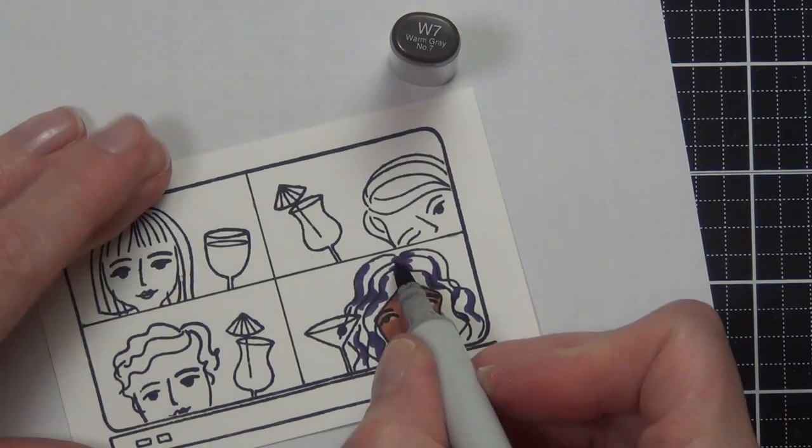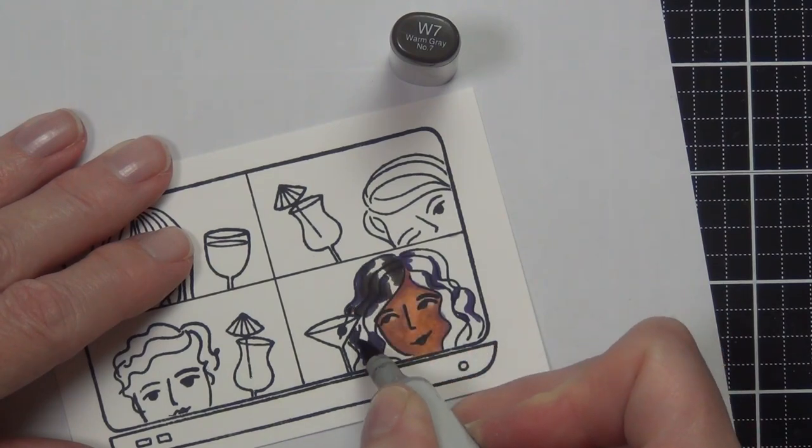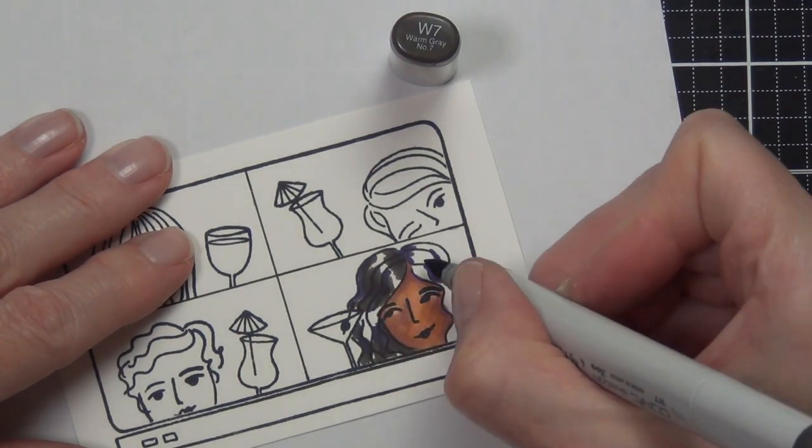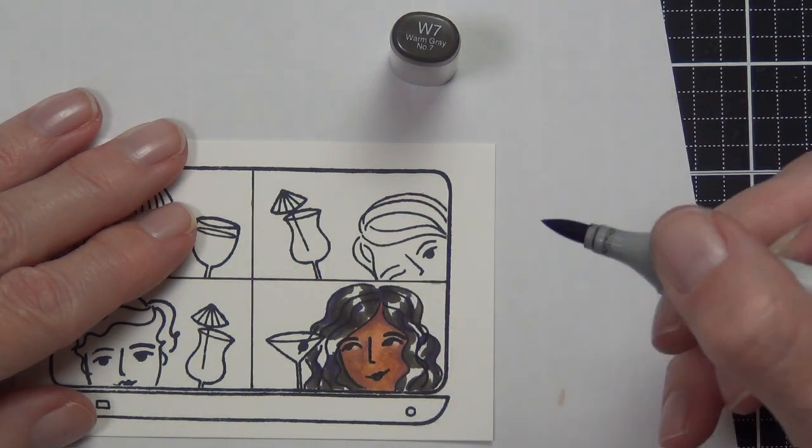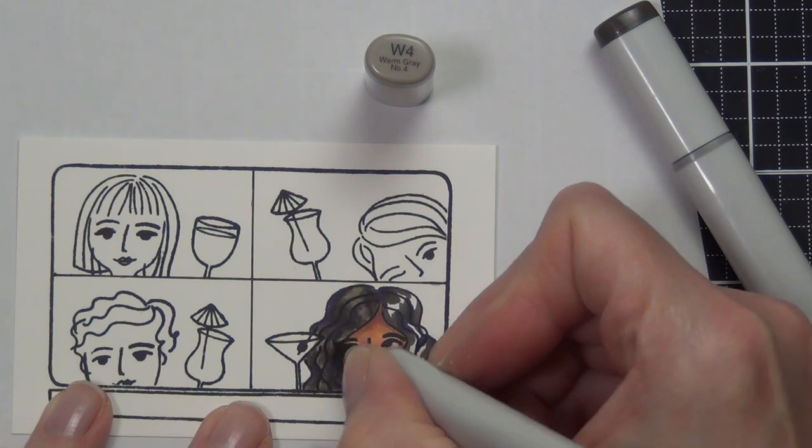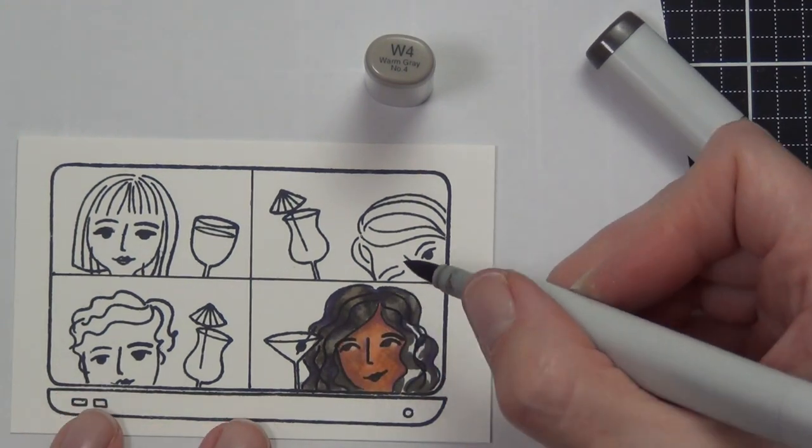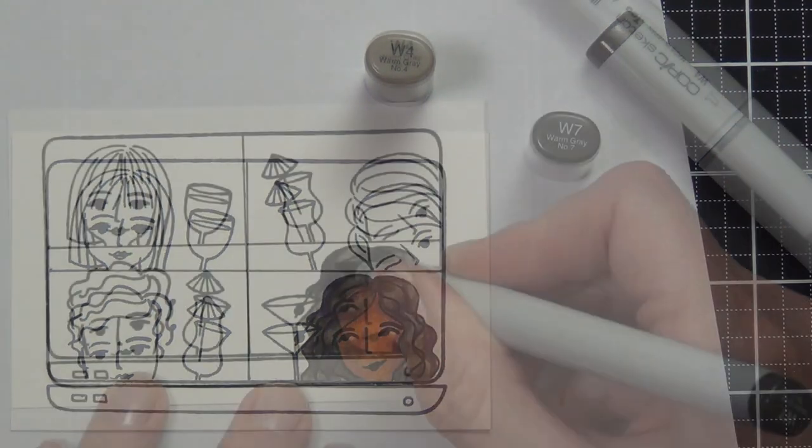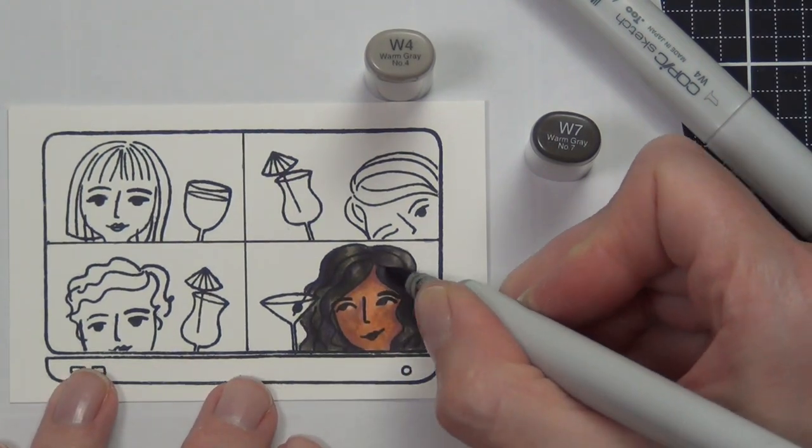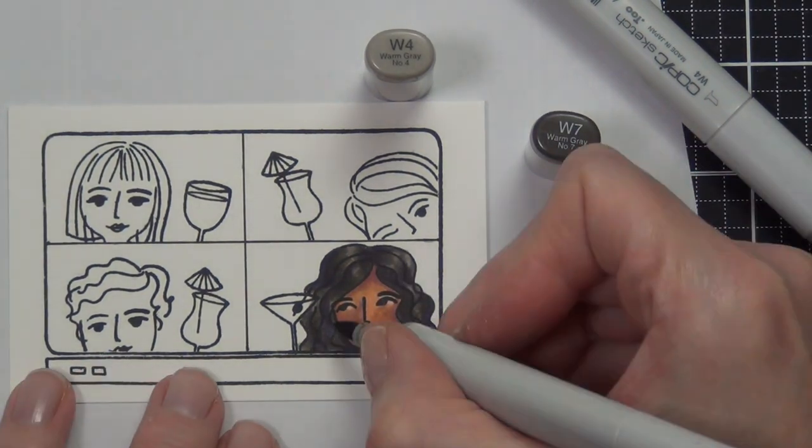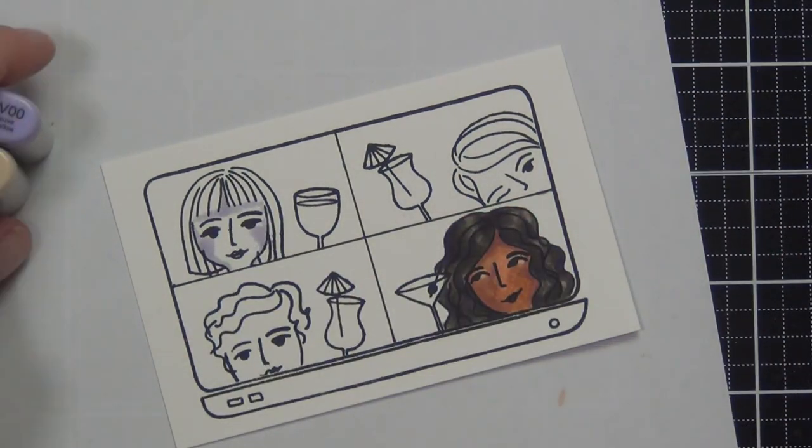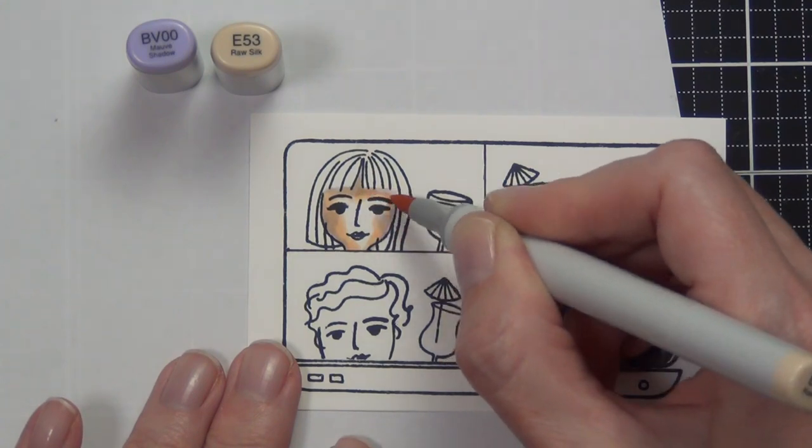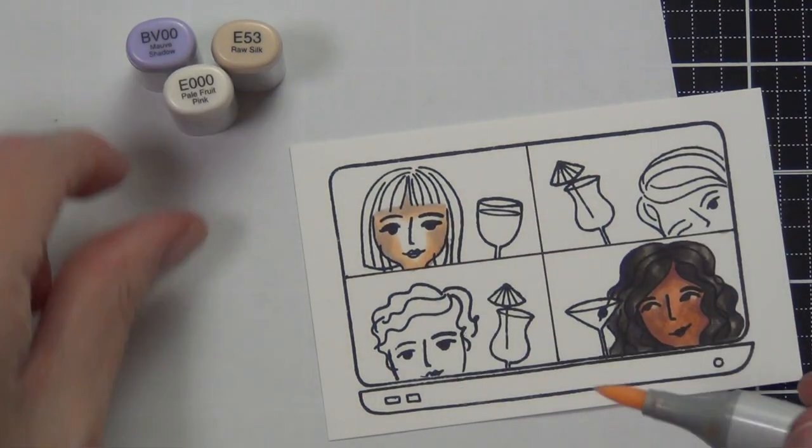If I know that I'm going to be using Copics like I did today, I used memento tuxedo black. Make sure you use an ink that is going to be compatible with the medium you're going to use. There are some great inks out on the market nowadays that will be suitable for most mediums, so it's just a matter of giving them a try and seeing which one you like the best and suits your style of stamping.